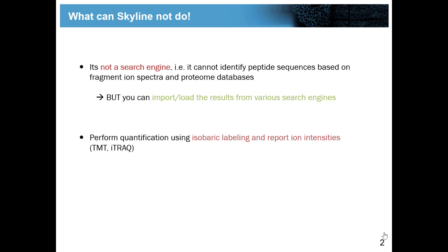So DDA is MS-1 level in Skyline typically, and DIA is just as PRM, MS-1 as well as MS-2 data. What can Skyline not do? What's often important to understand is that Skyline cannot identify peptide sequences for you as other search engines do.